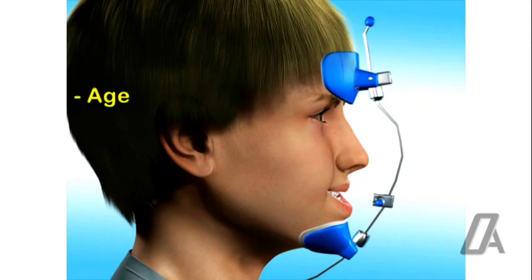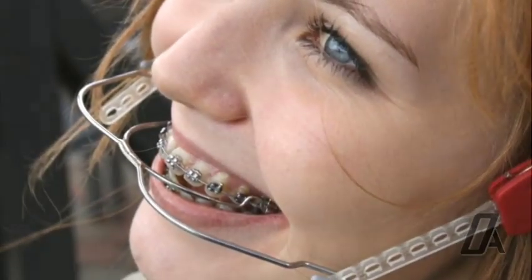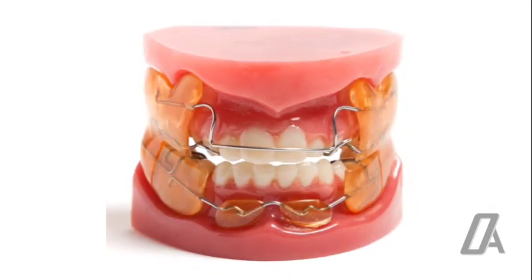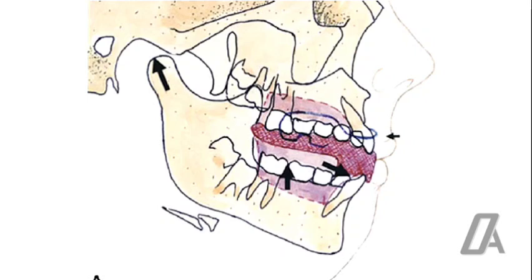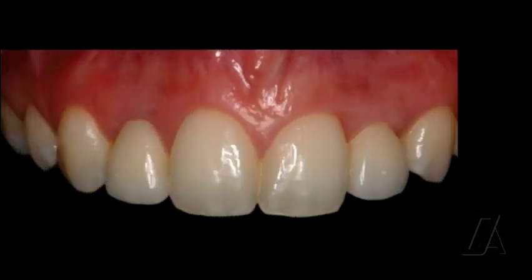It's important to remember that every case is unique. The timing and method of orthodontic intervention will depend on the individual's age, the severity of their issue, and their overall health. Early intervention can often lead to more effective results, but orthodontics can still offer solutions for adults experiencing issues related to maxilla growth. Orthodontics is a powerful tool in managing maxilla growth. It can help guide this growth during the critical development stages, correct issues that may have arisen, and ultimately help individuals achieve a healthy, functional bite and a confident smile. With the right orthodontic intervention, managing maxilla growth becomes a feasible task.